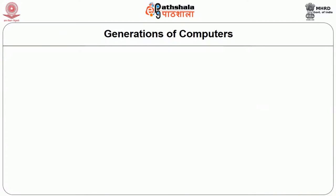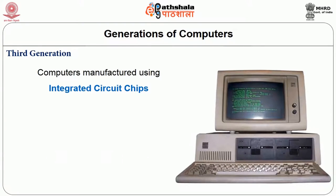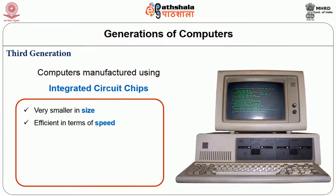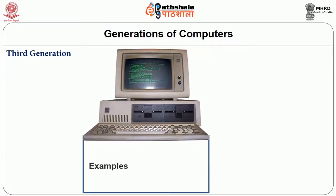In the third generation, small chips consisting of the capacity of 300 transistors were invented. These chips were also called integrated circuit chips, or IC chips. The computers designed using IC chips were still smaller in size and efficient in speed and memory capacity. High level languages like Fortran 4 and COBOL (Common Business Oriented Language) were in use. TDC 316, TDC 332 and IBM 370 are some examples of third generation computers.